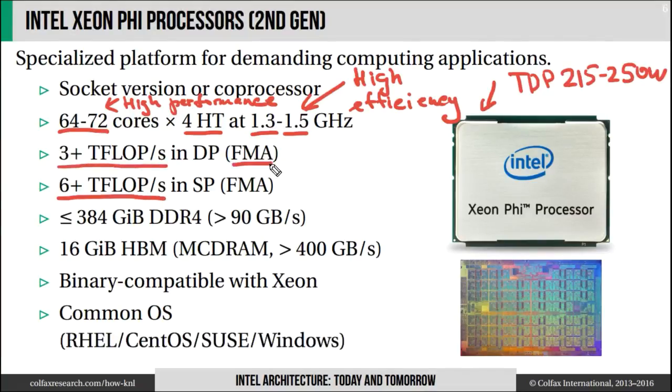This is for the fused multiply-add operation, FMA. This operation is relevant, for example, to the high-performance LINPACK benchmark.